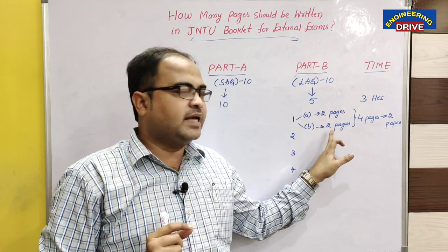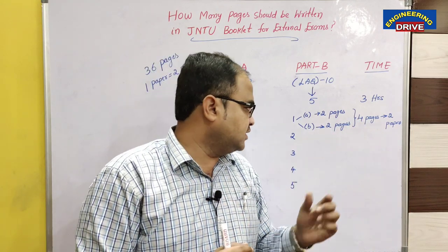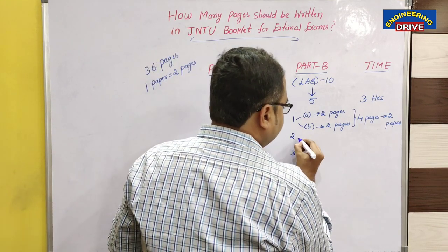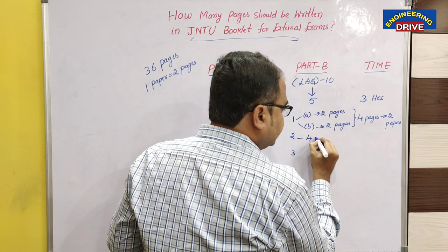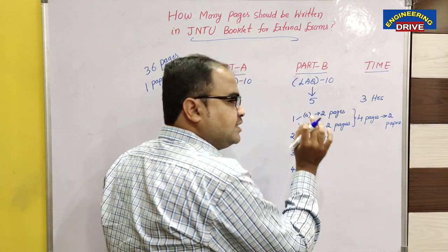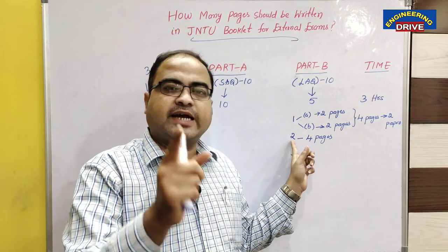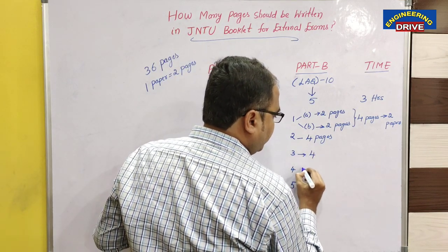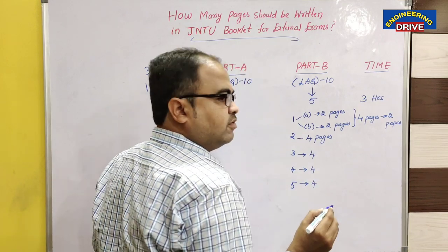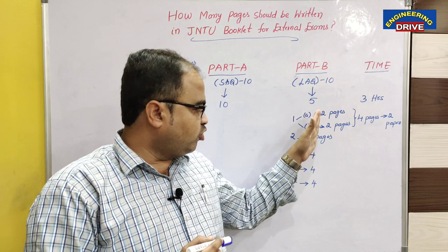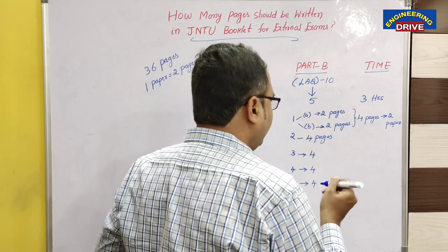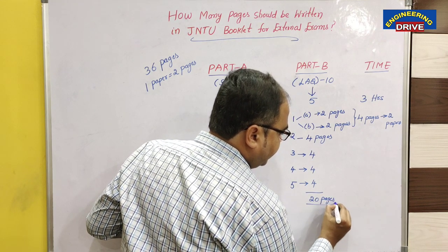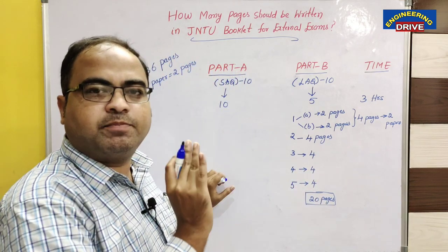Part A answer: two pages. Part B answer: two pages. Total: four pages for one long answer. Even when there are no sub-parts A and B, you still need to write four pages for that question. The answer should be maximum four pages — this is the maximum size, not the minimum. So for every long answer, four pages is the maximum criteria. When you write four pages for every long answer, you will complete your five long answers in 20 pages.